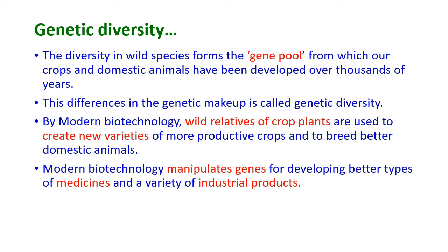The diversity in wild species forms the gene pool from which our crops and domestic animals have been developed over thousands of years. Wild species are those that grow in natural conditions like forests without human disturbance. These differences in genetic makeup are called genetic diversity. By modern technology, wild relatives of crop plants — those growing in wild areas with similar characteristics to cultivated crops — are used to create new varieties of more productive crops and to breed better domestic animals. Modern biotechnology manipulates genes for developing better medicines, plants, and industrial products.